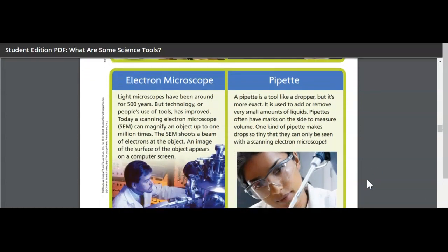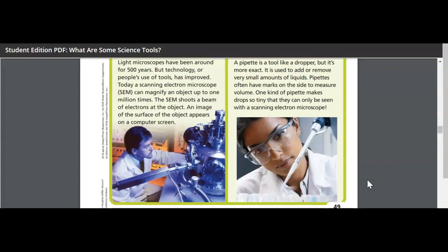Electron microscope. Light microscopes have been around for 500 years, but technology or people's use of tools has improved. Today, a scanning electron microscope, or an SEM, can magnify an object up to 1 million times. The SEM shoots a beam of electrons at the object. An image of the surface of the object appears on a computer screen.